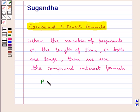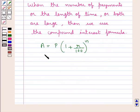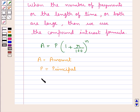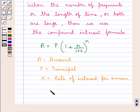The formula is: A is equal to P into 1 plus r upon 100, the whole to the power of n, where A is the amount, P is the principal, r is the rate of interest per annum, and n is the time in years.